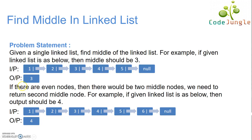For example, if we look at the first linked list, it has 5 nodes and hence an odd number of nodes. The middle element for this linked list becomes 3, because both the right-hand side and the left-hand side of this node contain the same number of elements.